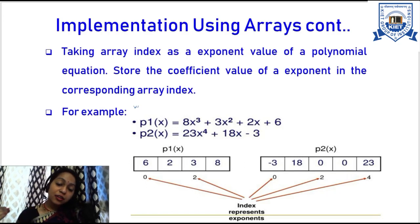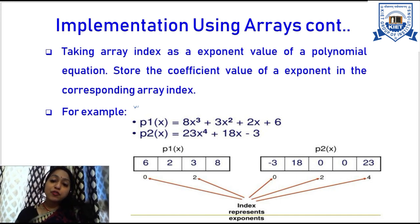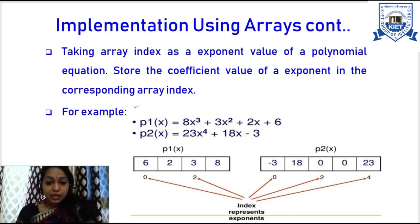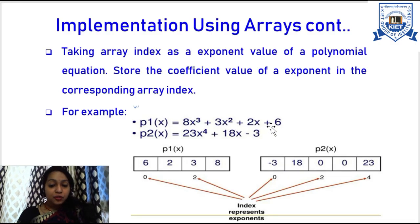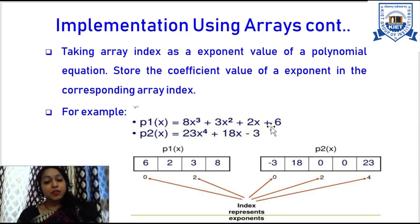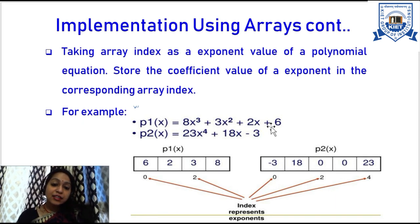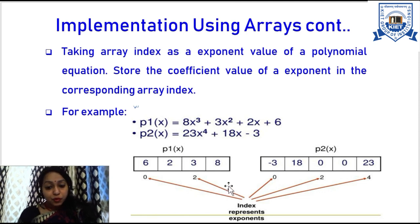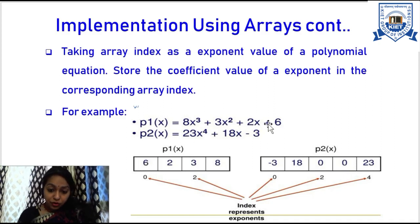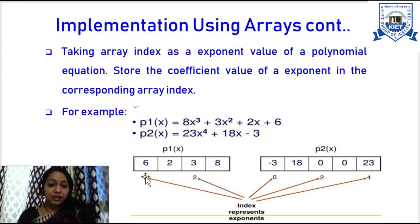Once we have allocated the size of the array, we need to store the polynomial equation in the array. We take the array index as the exponent value of a polynomial equation and store the corresponding coefficient value at that corresponding index. For example, with 8x power 3 plus 3x power 2 plus 2x plus 6, the highest exponent is 3, so the array size is 3 plus 1 = 4, with index locations from 0 to 3.